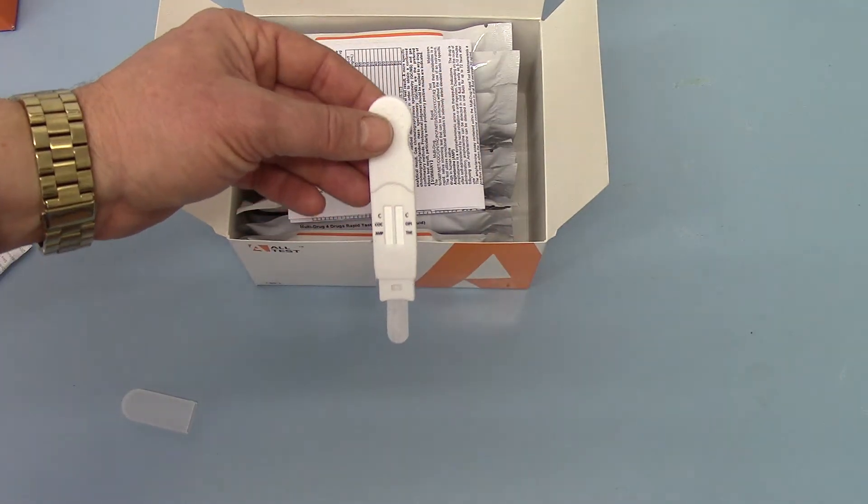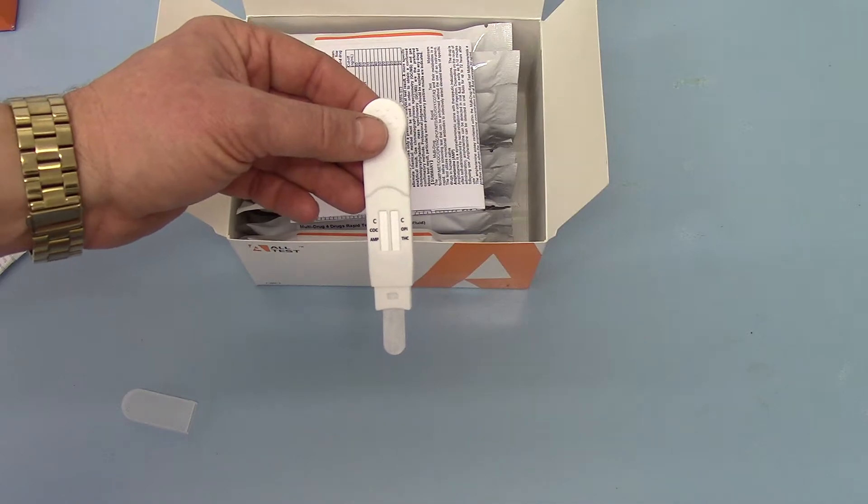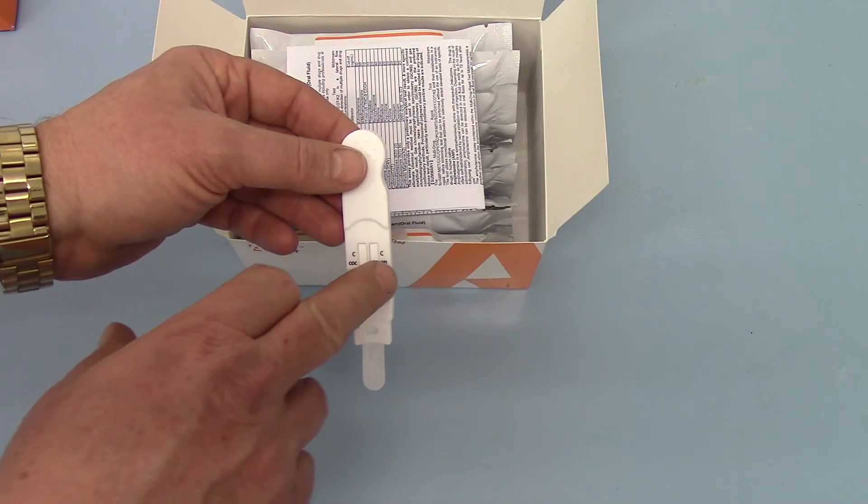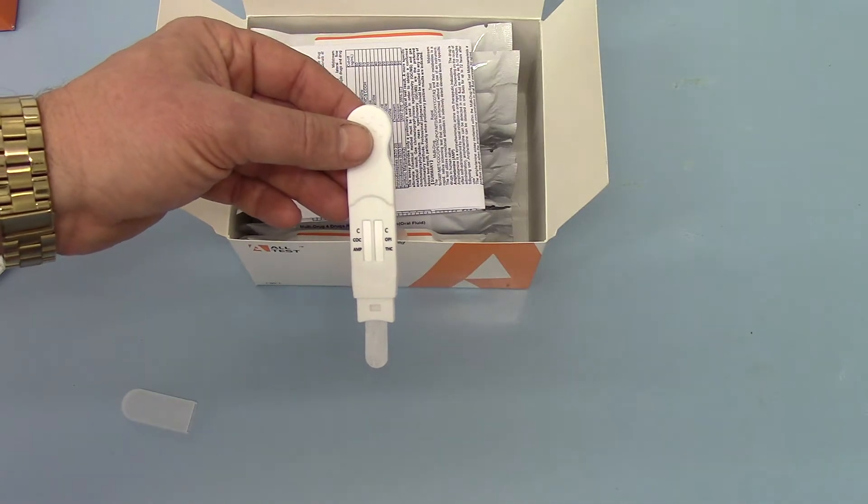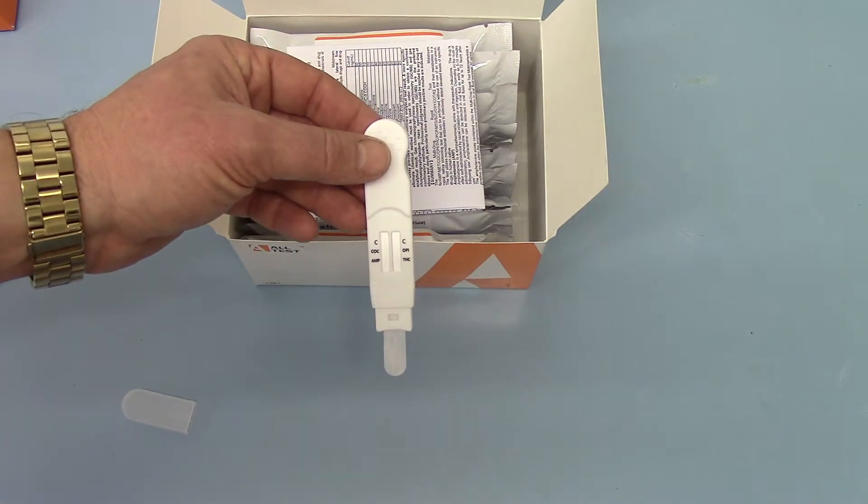You have two results channels or windows, both with control lines. Opiates and cannabis on one side, cocaine and amphetamine on the other.